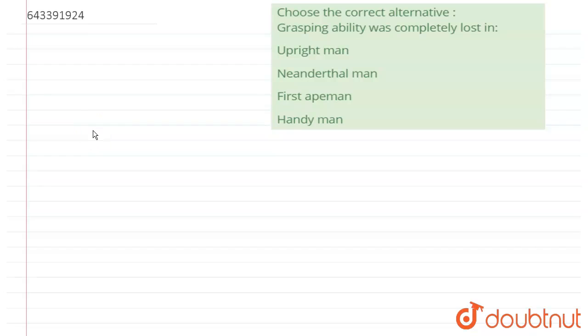The question says choose the correct alternative. The given question is: grasping ability was completely lost in? Here we have been given the different forms of evolution of man. There are upright man, Neanderthal man, first ape man, and handyman. These are the given options.